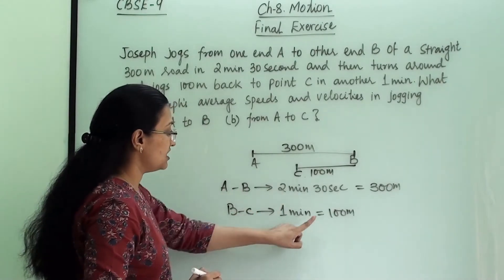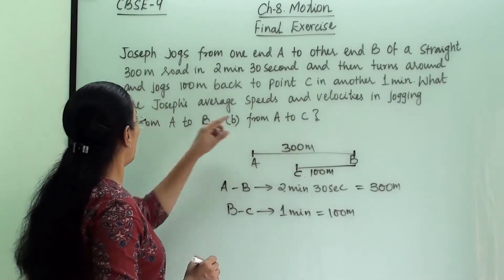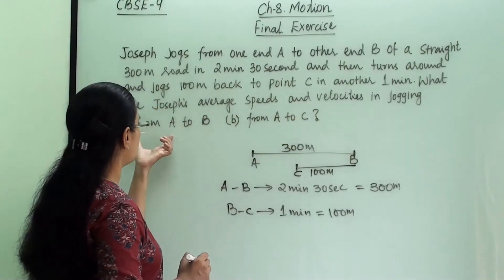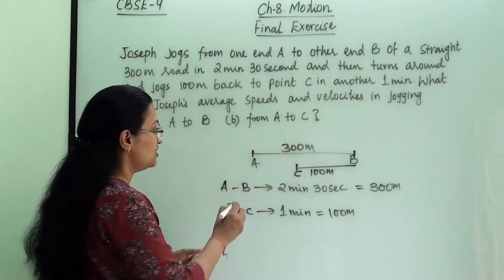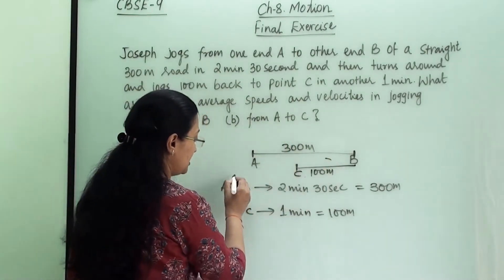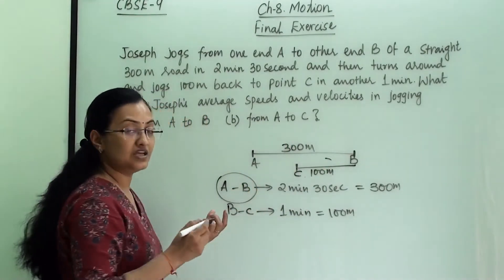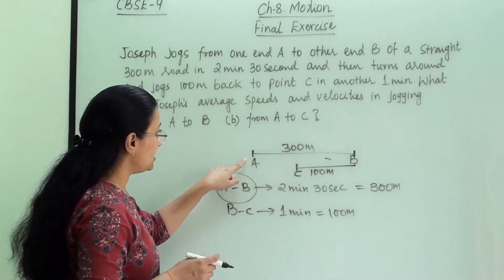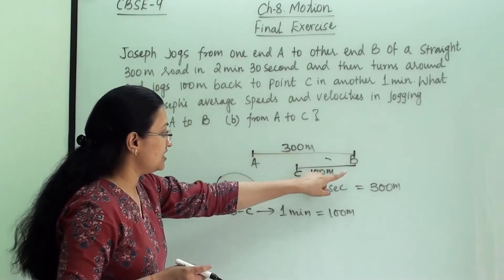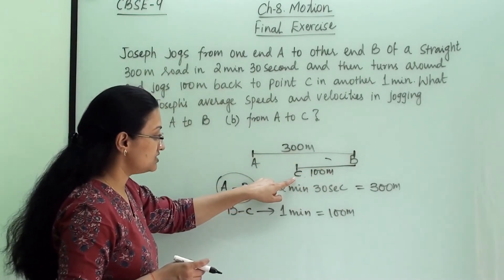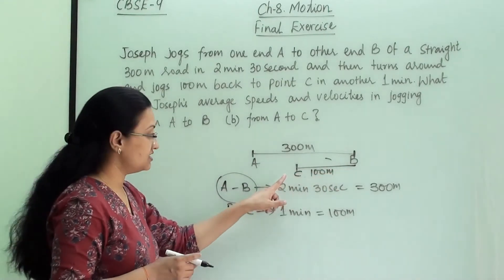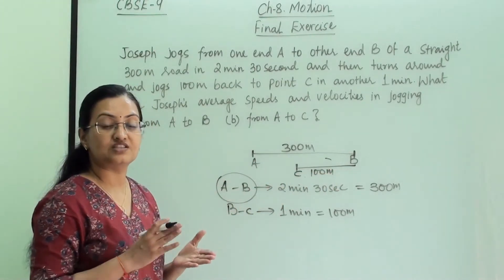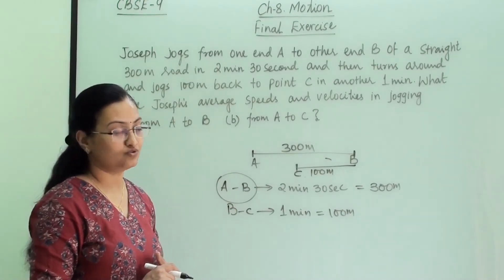What are Joseph's average speed and velocity in jogging from A to B, and from A to C? So for the first patch A to B we find his average speed and velocity, and for the complete track from A to C when he comes back till point C, we also find his average speed and velocity.